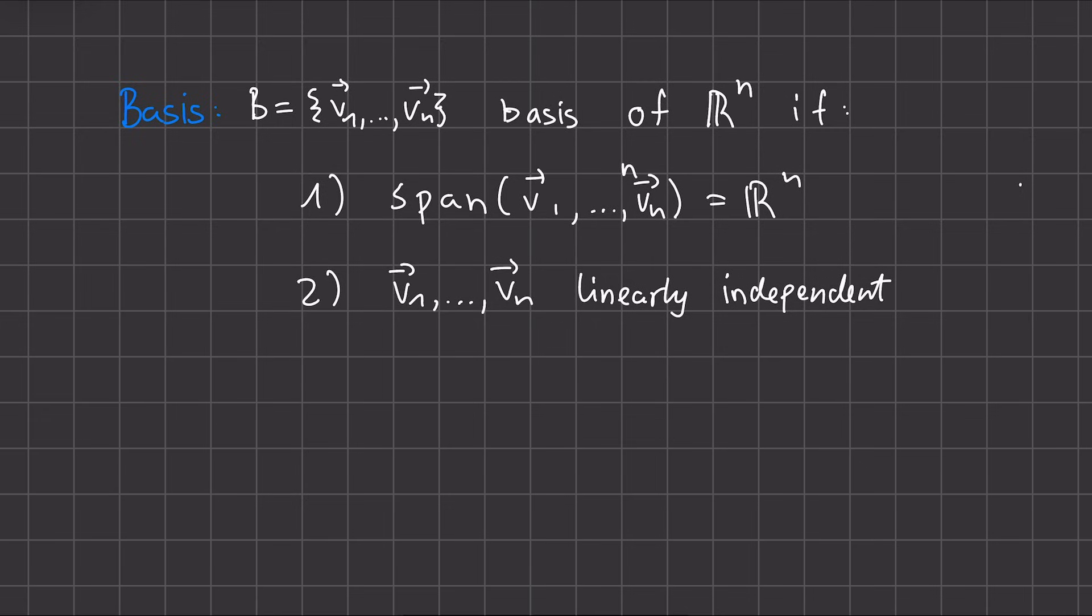And linearly independent, as I've mentioned before, means that we cannot write any of these vectors as a linear combination of all the other vectors here. Essentially meaning that every vector gives us new information, or rather, it gives us a new direction we can move in.